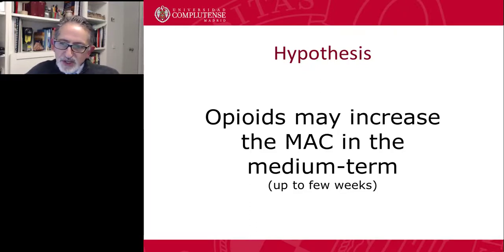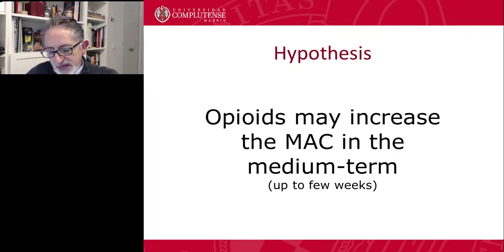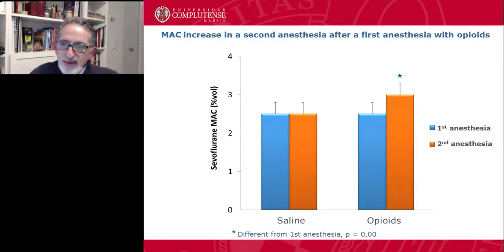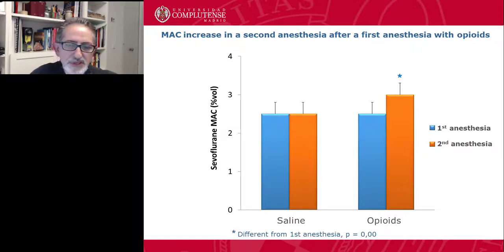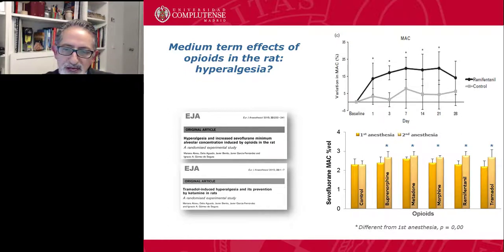Since there is an interaction between opioids and inhalational anesthetics, and since we saw this hyperalgesic effect of opioids, we hypothesized that the MAC might be increased just by giving an opioid before anesthesia — and by before I mean at least one day before, not just a few hours or minutes before. We were able to demonstrate that the administration of opioids in a first anesthesia may reduce the effectiveness of the anesthetic in a second anesthesia done one week later. The effect is slight — no more than 20% — but it can be evidenced in these studies. These two reports from our lab show that the effect may last up to 28 days.